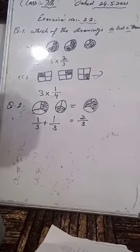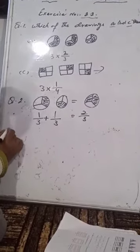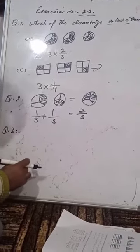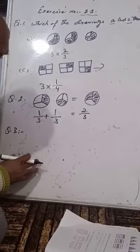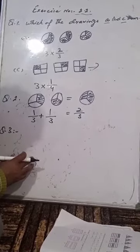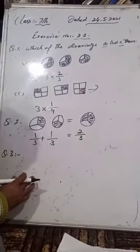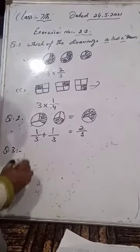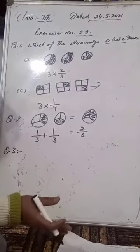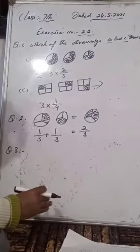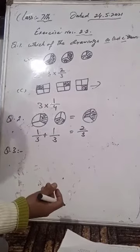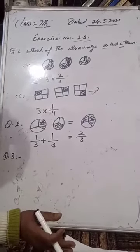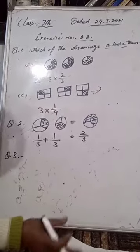So we will add these parts to complete this question. Now question number 3. You have page number 42: Multiply and reduce to the lowest form and convert into a mixed fraction.